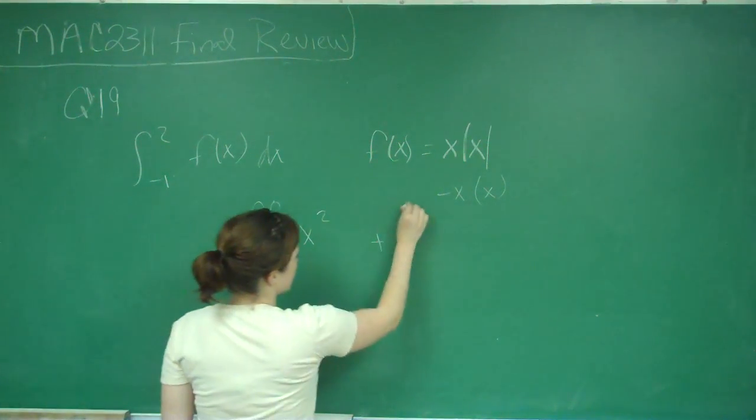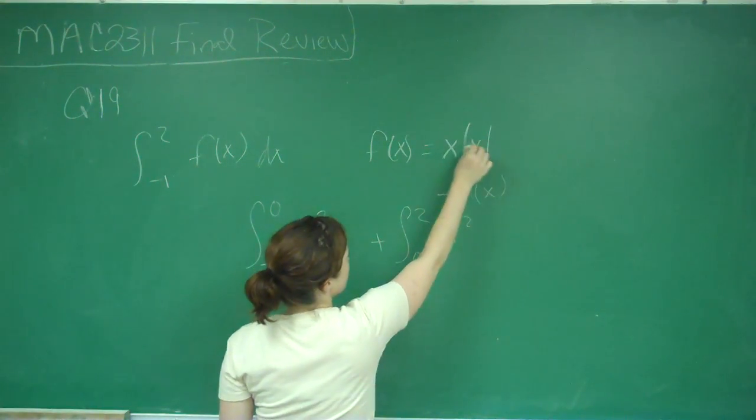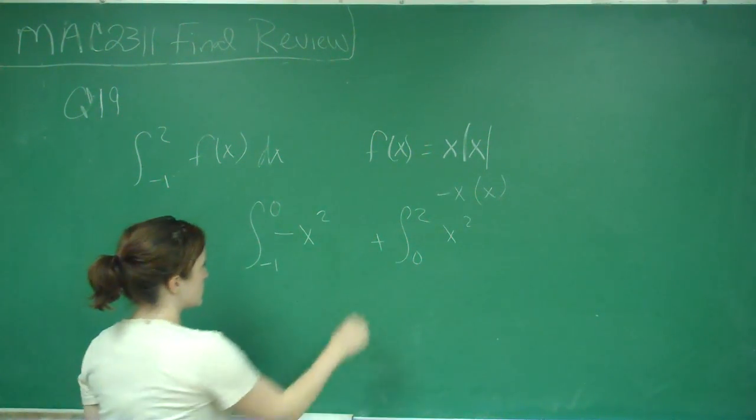And then plus the integral from 0 to 2 of just x squared because out here will be positive, this will be positive, so it will just be x squared.